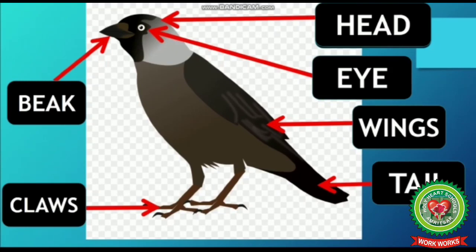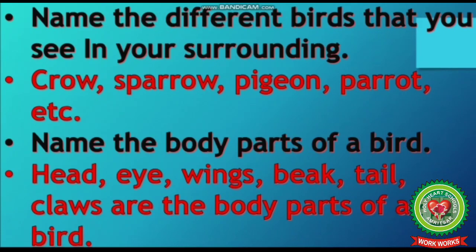Now let's revise. Name the different birds that you see in your surroundings — crow, sparrow, pigeon, parrot, etc. Name the body parts of a bird: head, eye, wings, beak, tail, and claws. Tomorrow I will continue with the next topic. Till then, read the chapter and draw a bird and label its parts on your copy. Thank you.